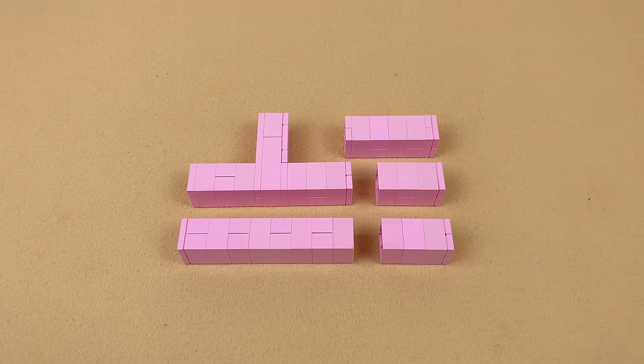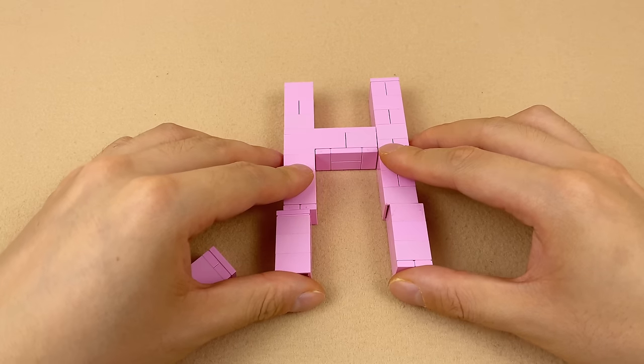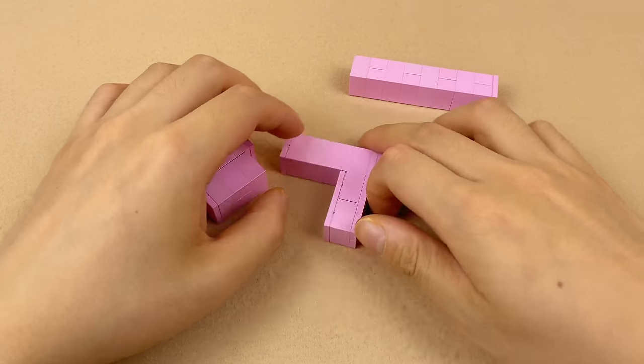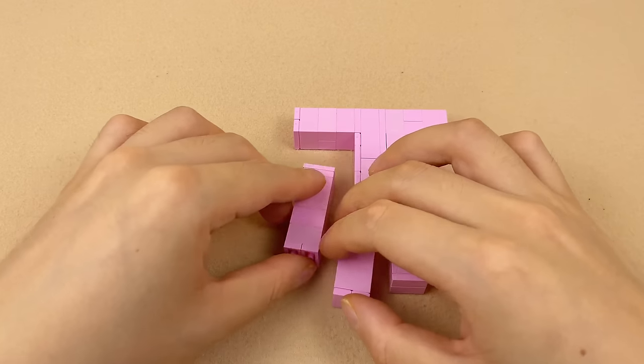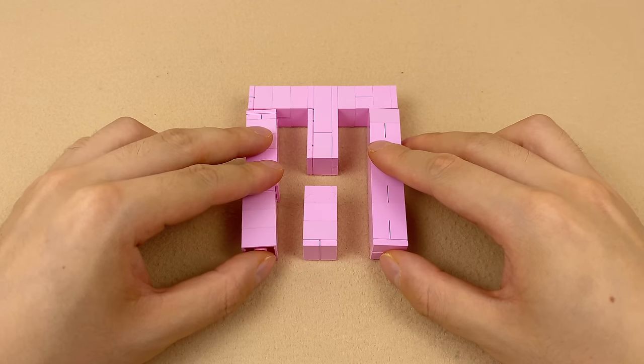This puzzle is called the find the letter H. You may use these parts to form an H with long legs, but there is still one part left. So the correct way is to form a symmetric shape with a hole in the center, and pull the parts to both sides. You can find the hidden H.